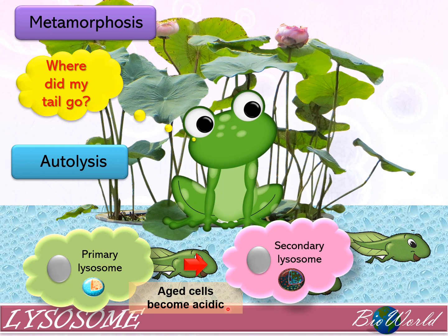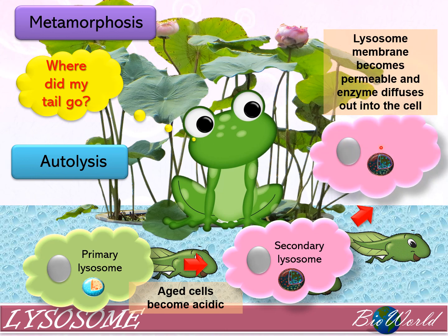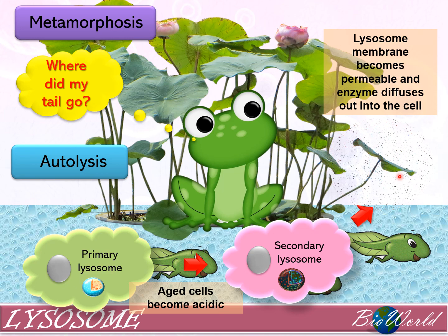In an acidic environment, the secondary lysosome's membrane becomes permeable, so the hydrolytic enzymes begin to diffuse into the cell cytoplasm. As the enzymes diffuse out, they begin to break down the molecules in the cell, thus destroying the cell. Autolysis occurs.